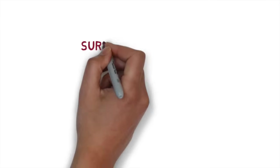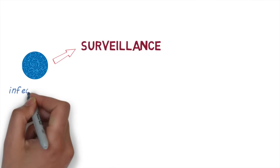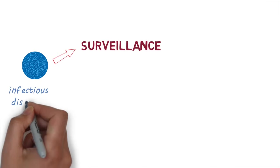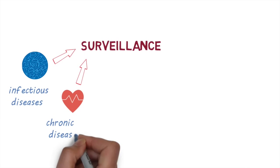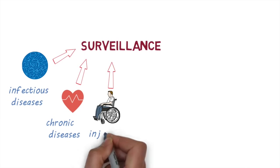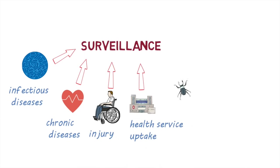Historically, surveillance was mainly used to monitor infectious diseases. However, it can be used to monitor any health-related event, such as chronic diseases, injury, health services uptake, vector distribution, or environmental hazards.